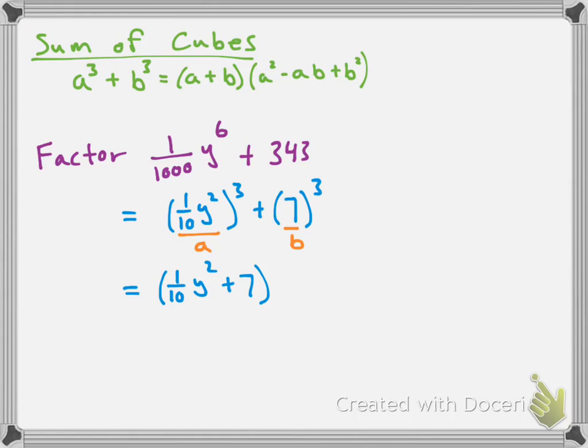And then inside of our brackets, we're going to have a squared. So our a is 1 over 10 y squared. So 1 over 10 y squared times 1 over 10 y squared is 1 over 100 y to the power of 4.